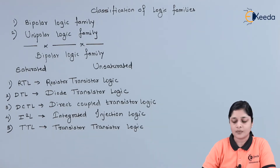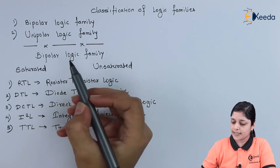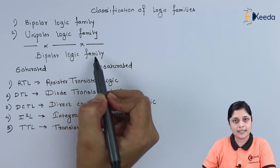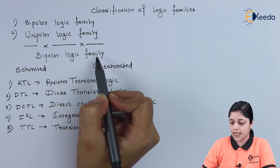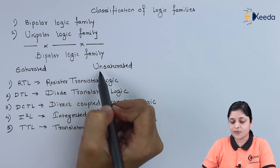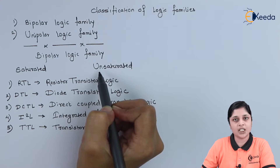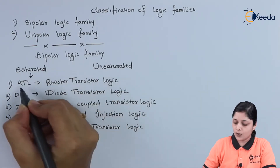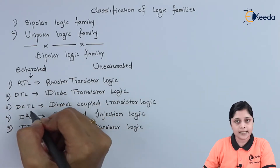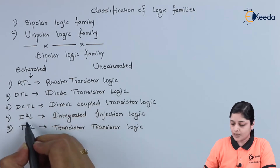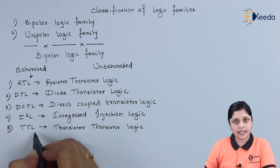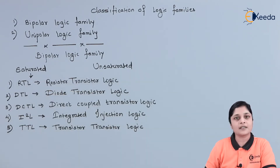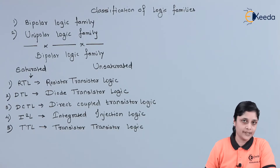So we have discussed the first type — bipolar logic families. It is divided into two types: saturated and unsaturated. RTL, DTL, DCTL, I²L, and TTL come under the saturated bipolar logic families.